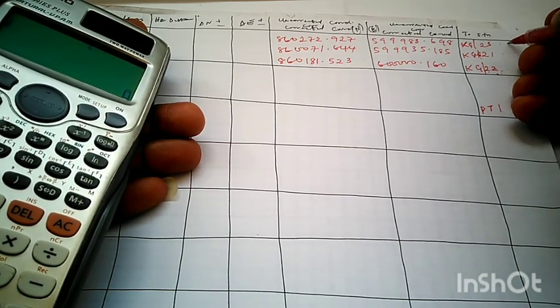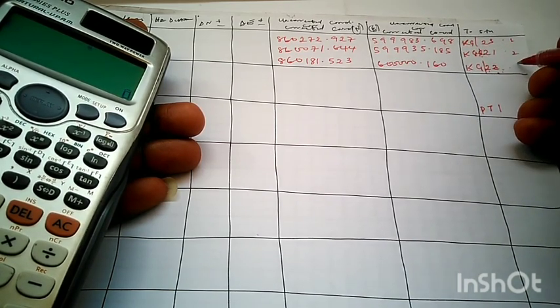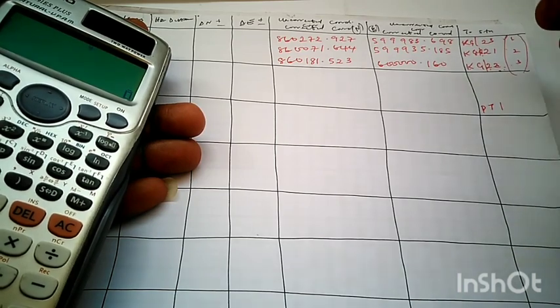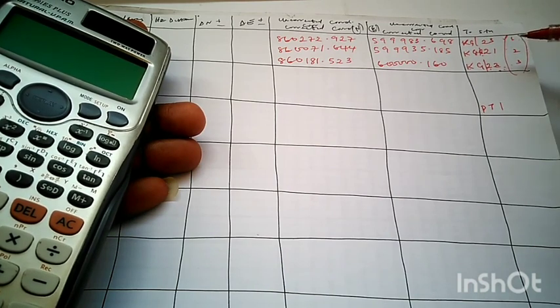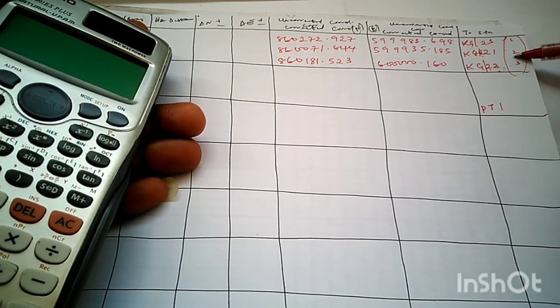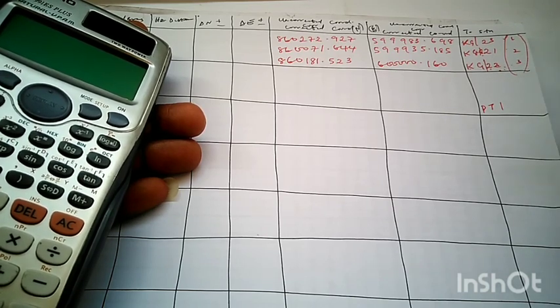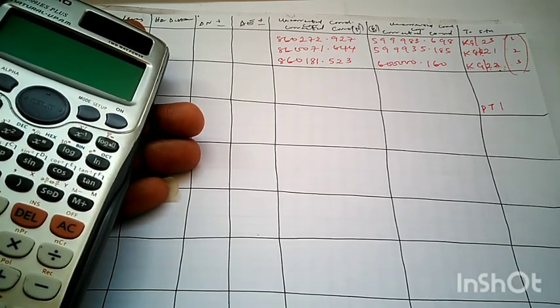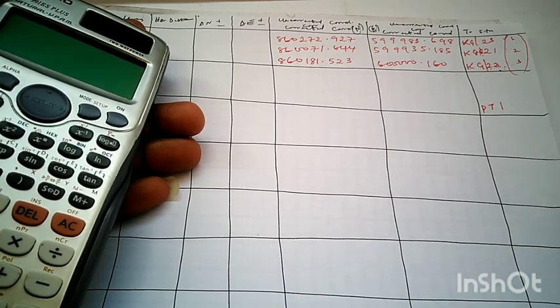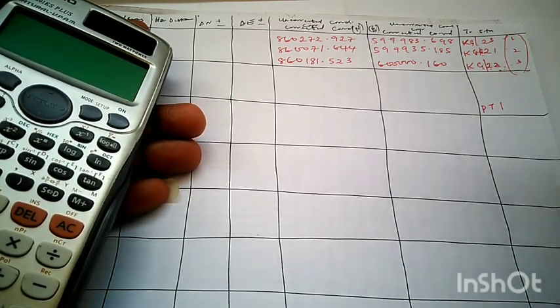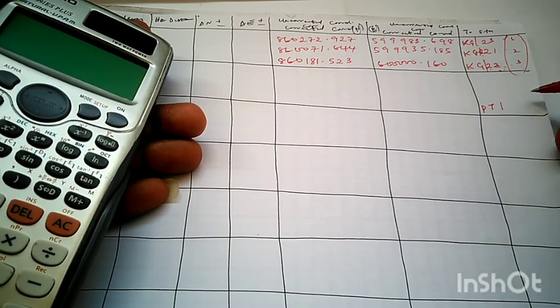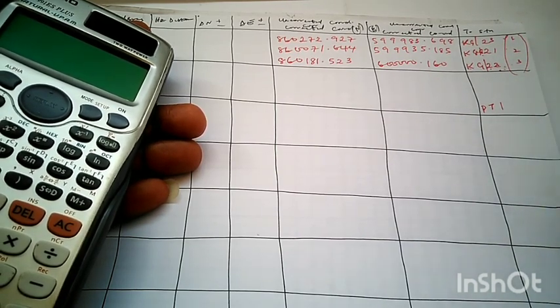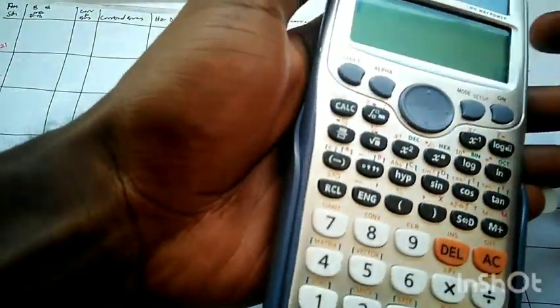How do we carry out the back computation? We say 2 minus 1, 3 minus 2, 4 minus 3, 5 minus 4, 6 minus 5 and so on. Is it very hard? No, it's not hard. It's very simple. Like that's the simplest method you can get anywhere.